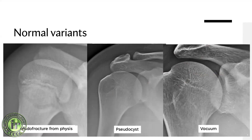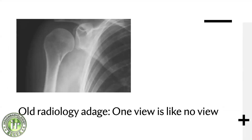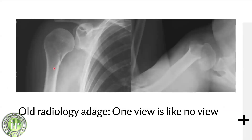There's the old radiology adage: one view is like no view. Here's an example where a humeral shaft looks relatively normal on one view, but on the axillary view there's a completely displaced surgical neck fracture. Views have an important role to play and we should know about them and their roles quite well.